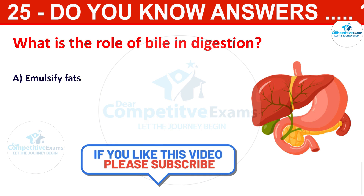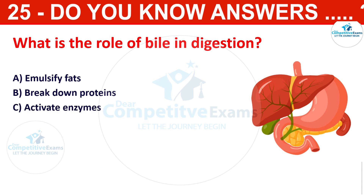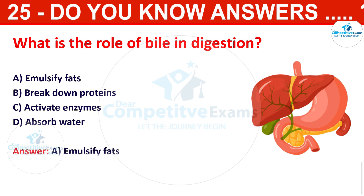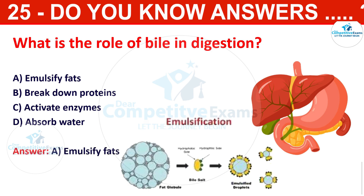What is the role of bile in digestion? The options are emulsify fats, break down proteins, activate enzymes, or absorb water. The correct answer is emulsify fats. Bile emulsifies fats, breaking them into smaller droplets to enhance digestion by lipases.